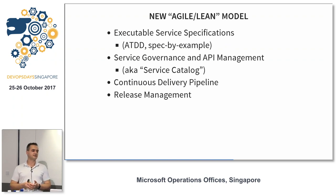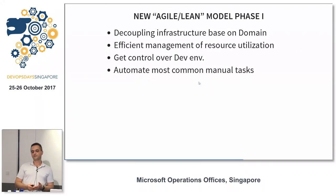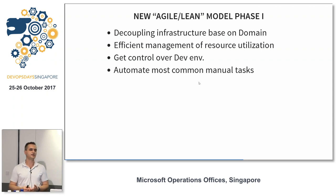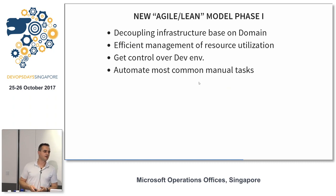We built a continuous delivery pipeline using Jenkins and streamlined our release management. This was a very big change for teams and all dependent consumers and providers. From a release management perspective, around 30 to 40% of the weekly deployments in the bank were handled by this team — so roughly 30% of the load across 3,000 applications was done by one single team, because everybody tried to change or reuse services or deploy new ones.